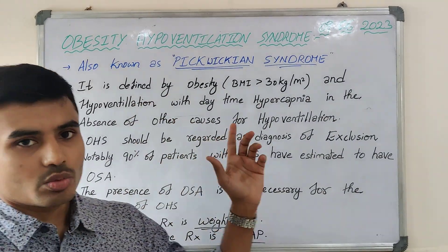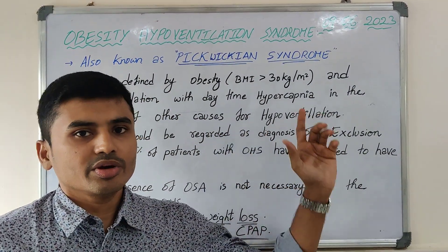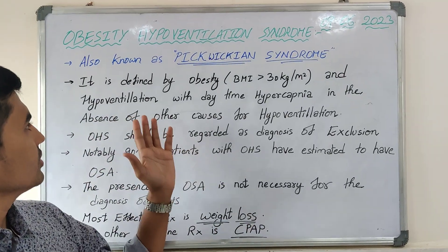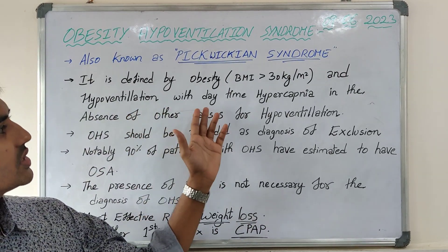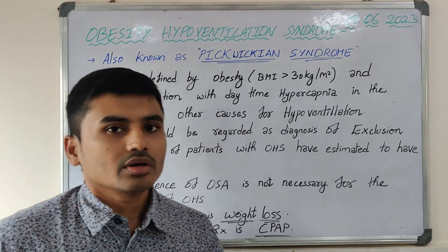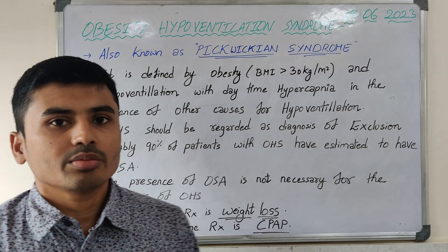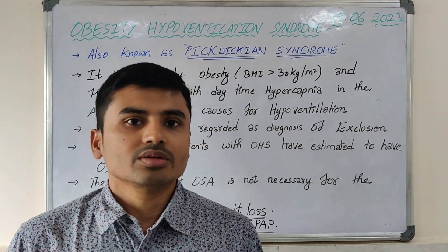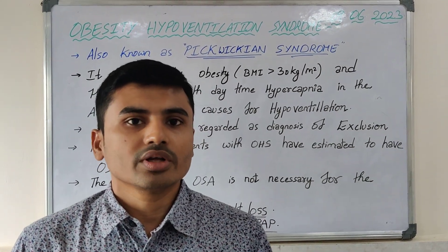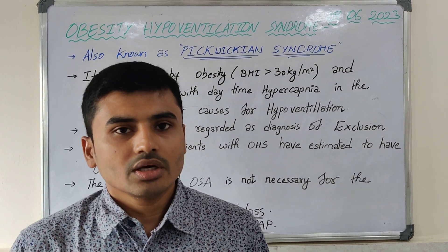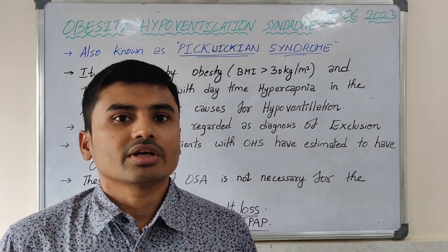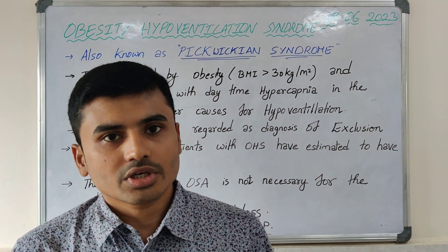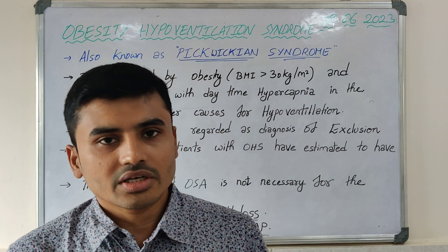It is defined as obesity — BMI more than 30 kilos per meter square — and hypoventilation with daytime hypercapnia. Daytime hypercapnia, when measured with ABG, is PCO2 more than 45 mmHg, in the absence of other features of hypoventilation like severe obstructive or restrictive lung disease.